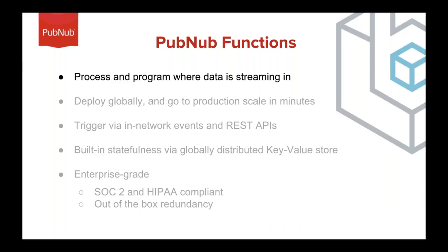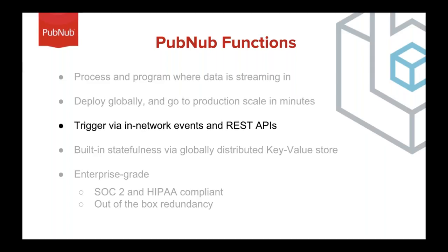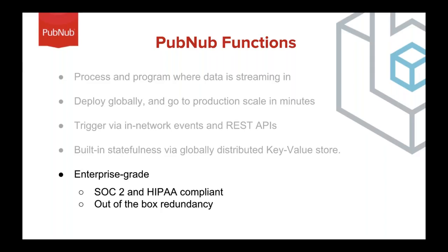PubNub Functions allow you to process and program data as you stream it in, removing the necessity of ingesting data at a server and routing it elsewhere for processing. We deploy your functions globally, allowing you to go to production scale in minutes. We have 15 points of presence around the world, ensuring the lowest latency possible. You can trigger PubNub Functions via in-network events such as a publish to a channel, or by making HTTP requests via REST APIs. We've also brought in built-in statefulness with a globally distributed key-value store. PubNub Functions are enterprise-grade, compliant with SOC2 and HIPAA, and provide out-of-the-box redundancy.